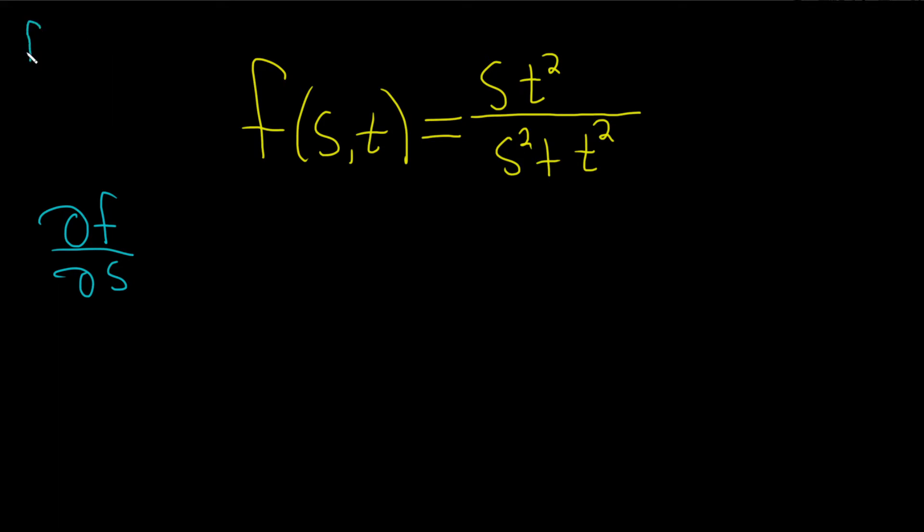Recall the quotient rule says if you have a function f over g and you take the derivative, the formula is as follows. Think of f as your top function and g as your bottom function, so it's the derivative of the top times the bottom minus the top times the derivative of the bottom, all over the bottom squared like this.